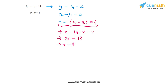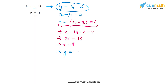I've managed to find the value of x as 9. Now I can substitute this value back into the equation y equal to 14 minus x. That gives me y equal to 14 minus 9, or 5. So the solution of the first pair of equations is x equal to 9 and y equal to 5.